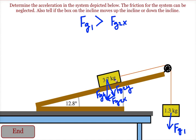If this block is moving up the incline, we would draw friction going down the incline. If the block is moving down the incline, then we draw friction pointing up the incline.